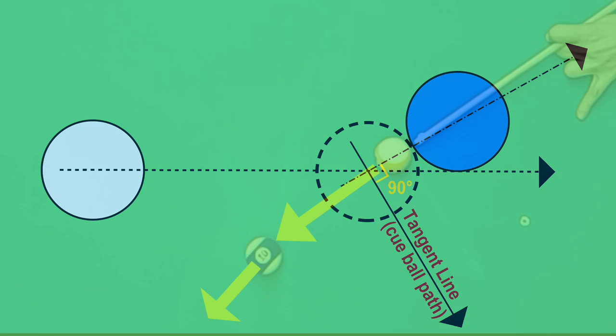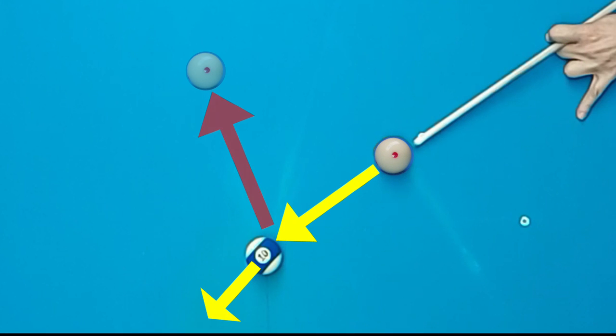And on a related note, also some teach that inside English can help you draw the ball more sharply, myself included. Is that true? Or is it a myth? And how does the tangent line factor in? Let's find out.